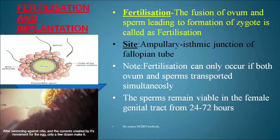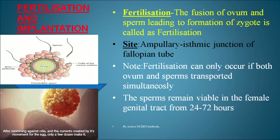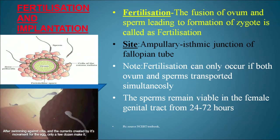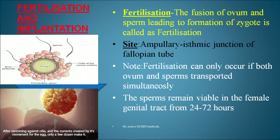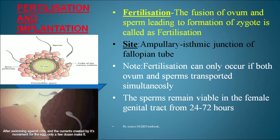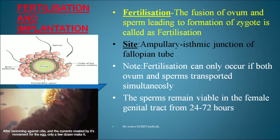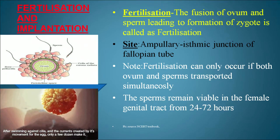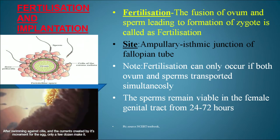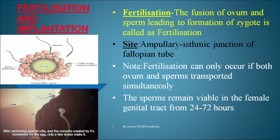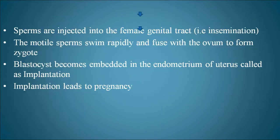Fertilization is the fusion of ovum and sperm leading to formation of a zygote. This event takes place at the ampullary-isthmic junction of the fallopian tube. Fertilization can only occur if both ovum and sperm are transported simultaneously. Sperms remain viable in the female genital tract for 24 to 72 hours. Sperms injected into the female genital tract via the penis is a process called insemination.